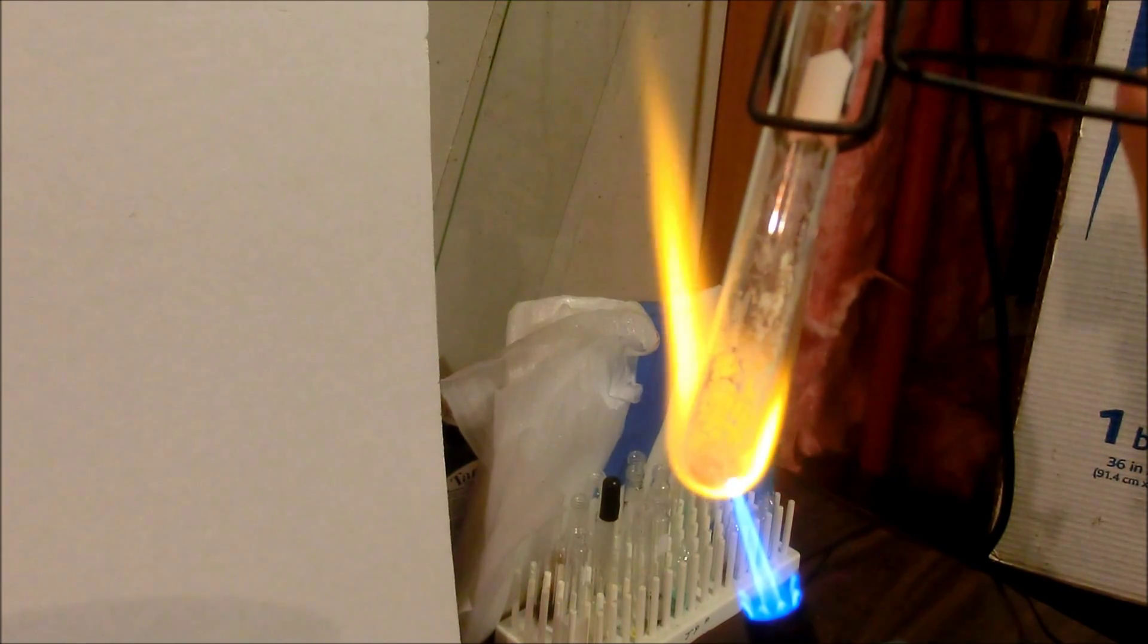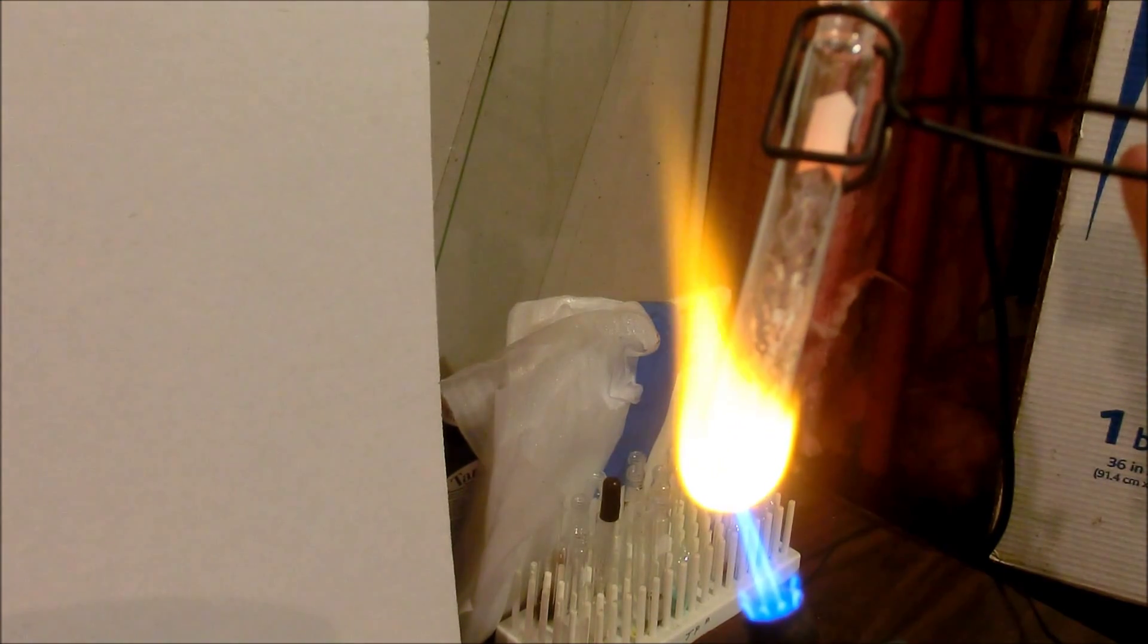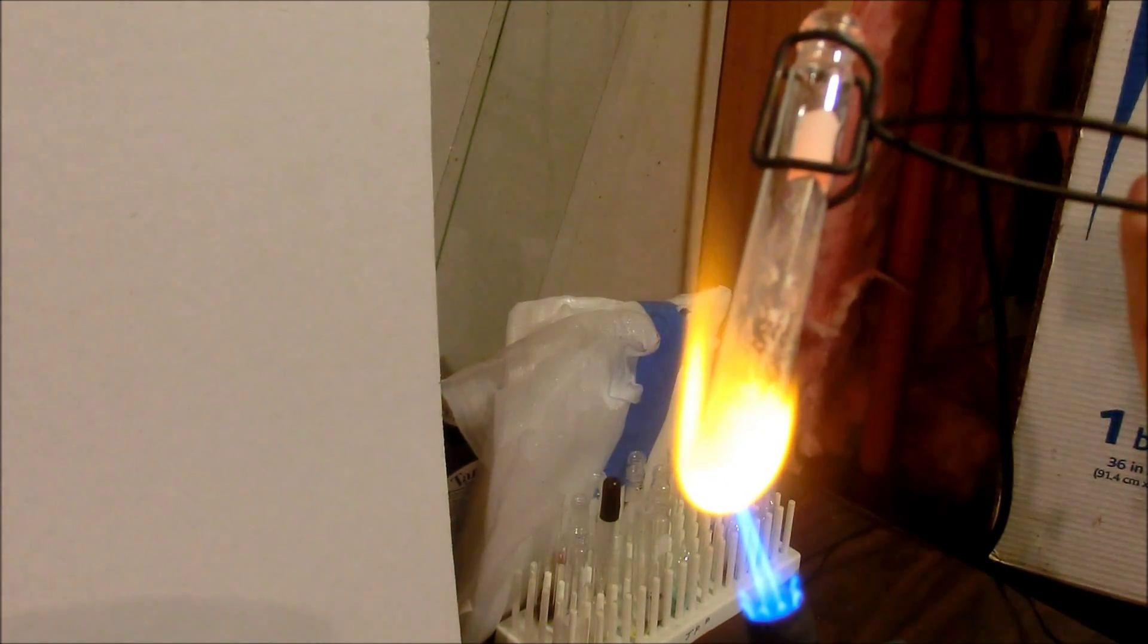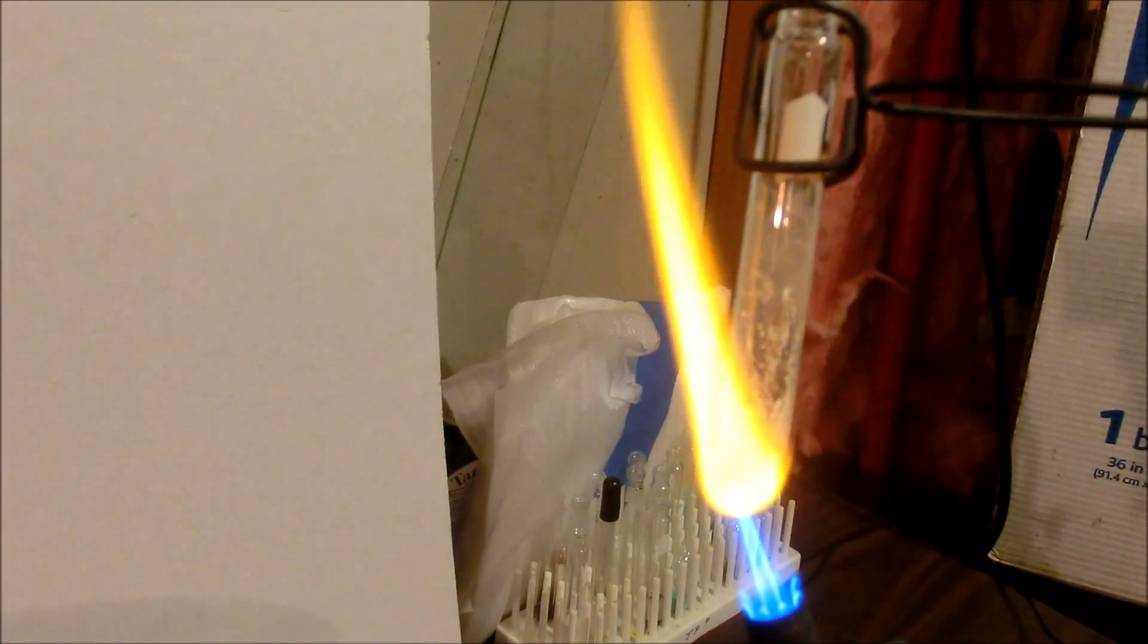As you heat the zinc sulfide will turn a yellow color and eventually it should begin to glow under the heat. And what's happening here is we're crystallizing the zinc sulfide into the wurtzite phase. And some of it's zinc blend. And that's what we need for it to be phosphorescent. But I'll just continue heating this for another 10-15 seconds.